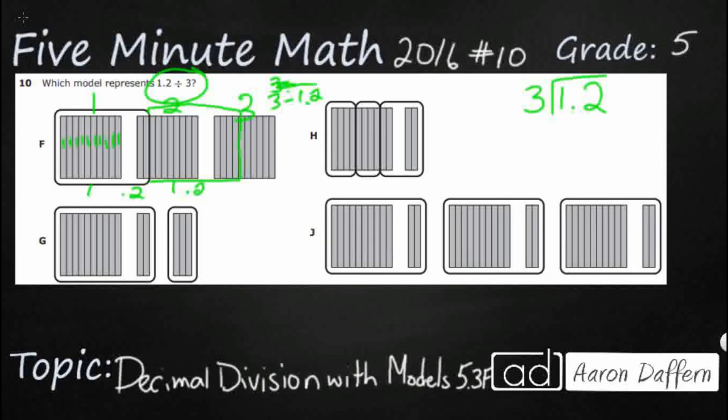And then you don't have enough, so this would be 3 divided by 1.2, then you'd have a remainder. So either way you look at it, F is just not going to work.